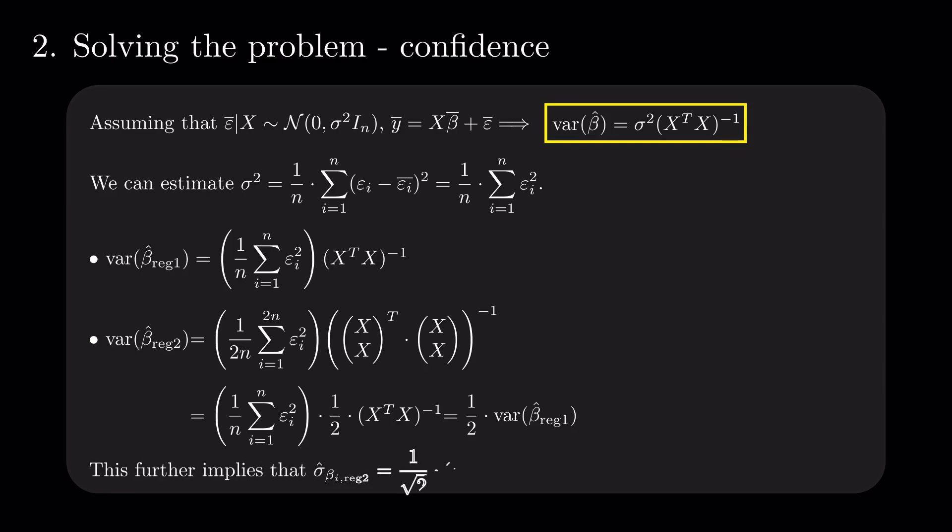In conclusion, when doubling the data, we reduce the standard deviation by a factor of square root of 2.